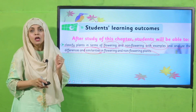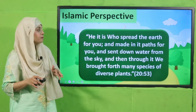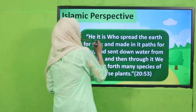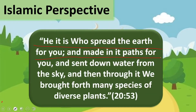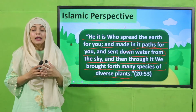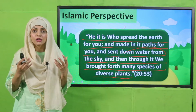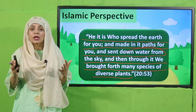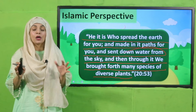Now let's look at the Islamic perspective. Allah says in the Quran: 'It is He who spread the earth for you and made paths for you, and sent down water from the sky, and through it We brought forth many species of diverse plants.' This ayat makes it very clear that Allah has sent down rain from the sky, and through rain He has created so many diverse plants. That is why we have categorized and classified them into flowering and non-flowering.